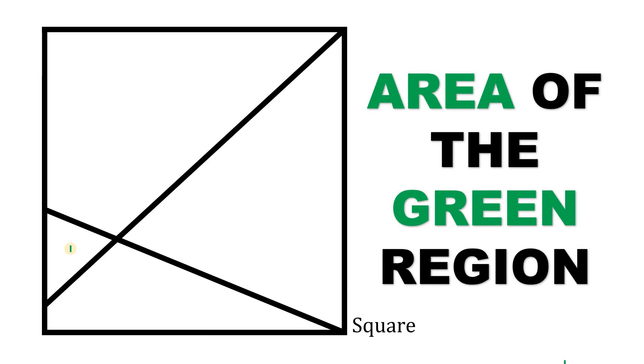The area of this triangle is 1 square unit. The area of this quadrilateral is 4 square units. And the area of this triangle is 9 square units. Now the question is, what is the area of this green region?